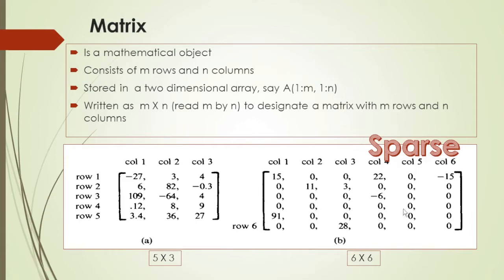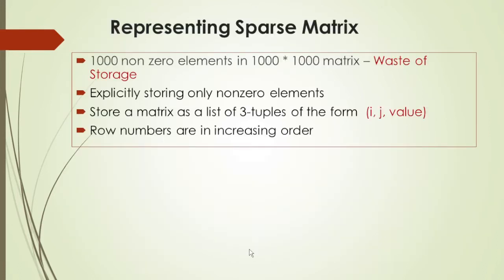We call this matrix a sparse matrix. There are only 1000 non-zero elements and 9000 elements are zero. If we store it as a 2-dimensional array, it is a waste of storage. What do we do instead?